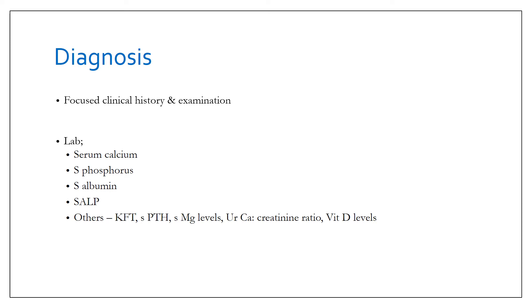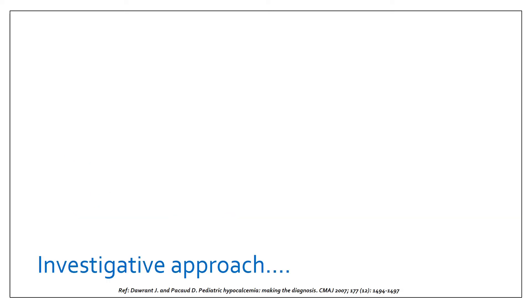Serum alkaline phosphatase and others like renal function tests, serum parathormone, magnesium levels, urine calcium creatinine ratio, and vitamin D levels. Now this is an investigative approach I found to be very useful. First test you must order besides serum calcium: once you have confirmed that hypocalcemia is there, you should next test serum phosphate.